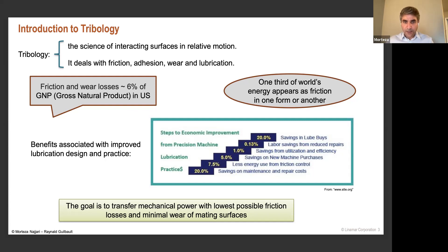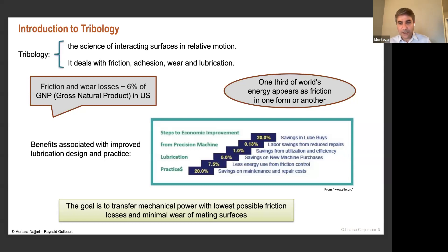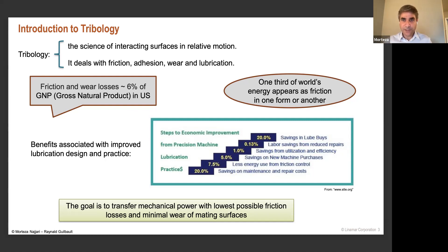If we look at the world scale, one third of world energy appears as friction in one form or another. A study by Dr. Peter Jost from the UK showed that the two highest gains from improved lubrication design are savings in maintenance and repair costs and energy savings by reducing friction losses through more optimum operation.